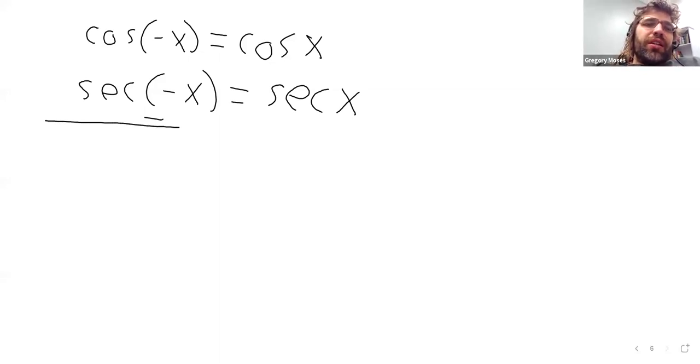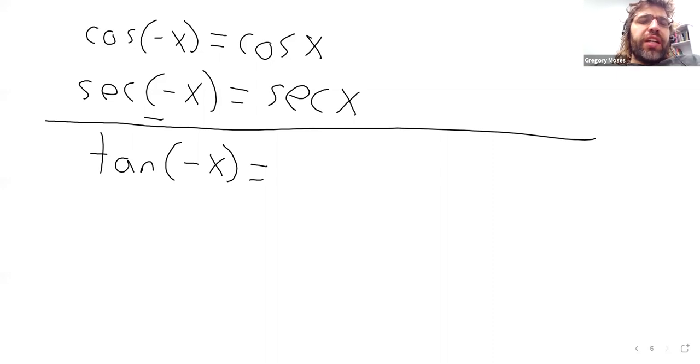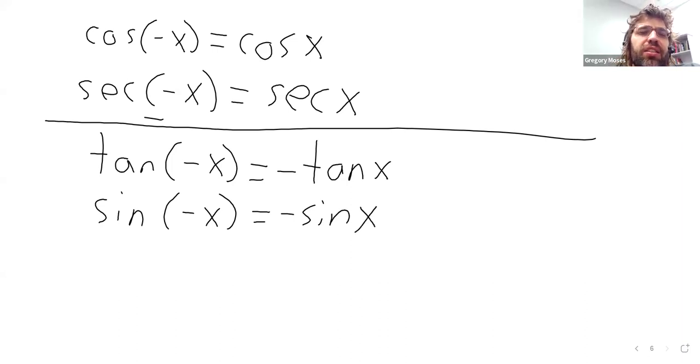And then the other trig functions are odd. And again, when we first made this statement, we didn't call it an identity. But it is an equality that is true for every value of x. So it is an identity, whether we used that word or not.